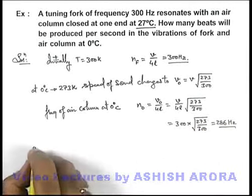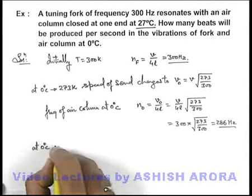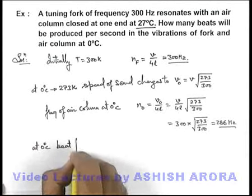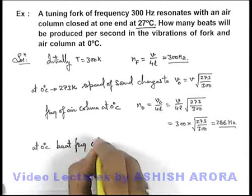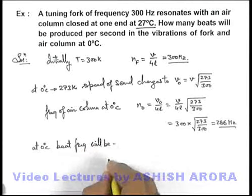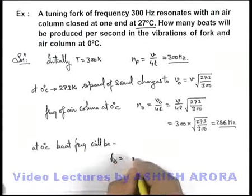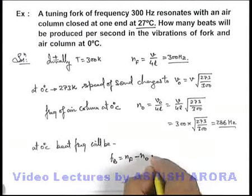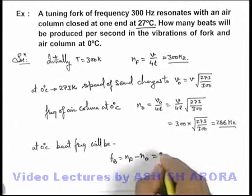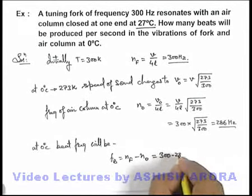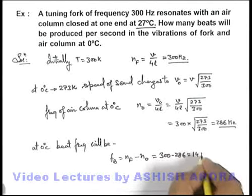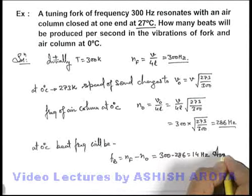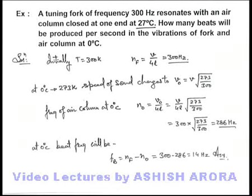Now we can say at zero degrees centigrade, beat frequency will be frequency of tuning fork minus frequency of air column at zero degrees centigrade. So this will be 300 minus 286, that will be 14 hertz. That is the answer to this problem.